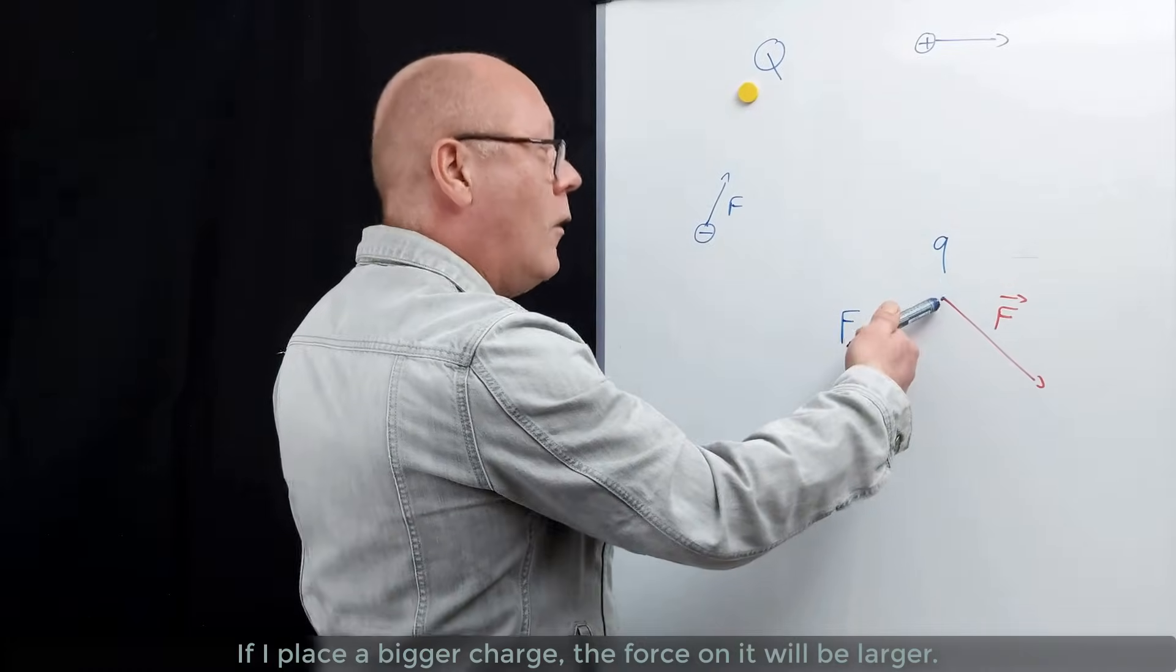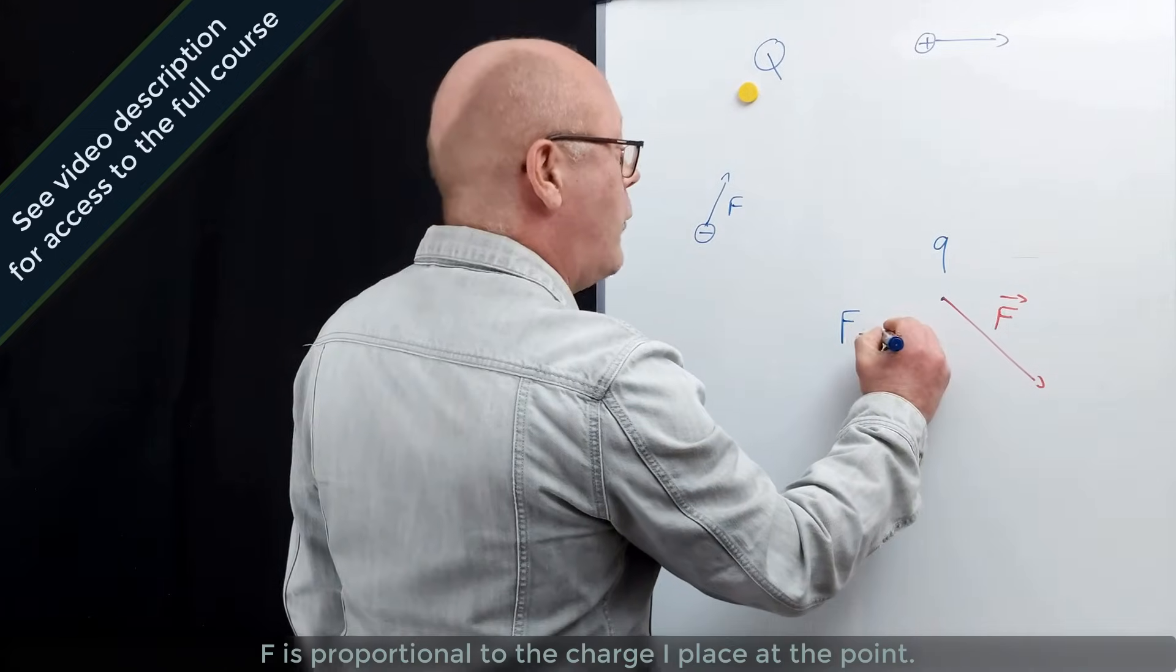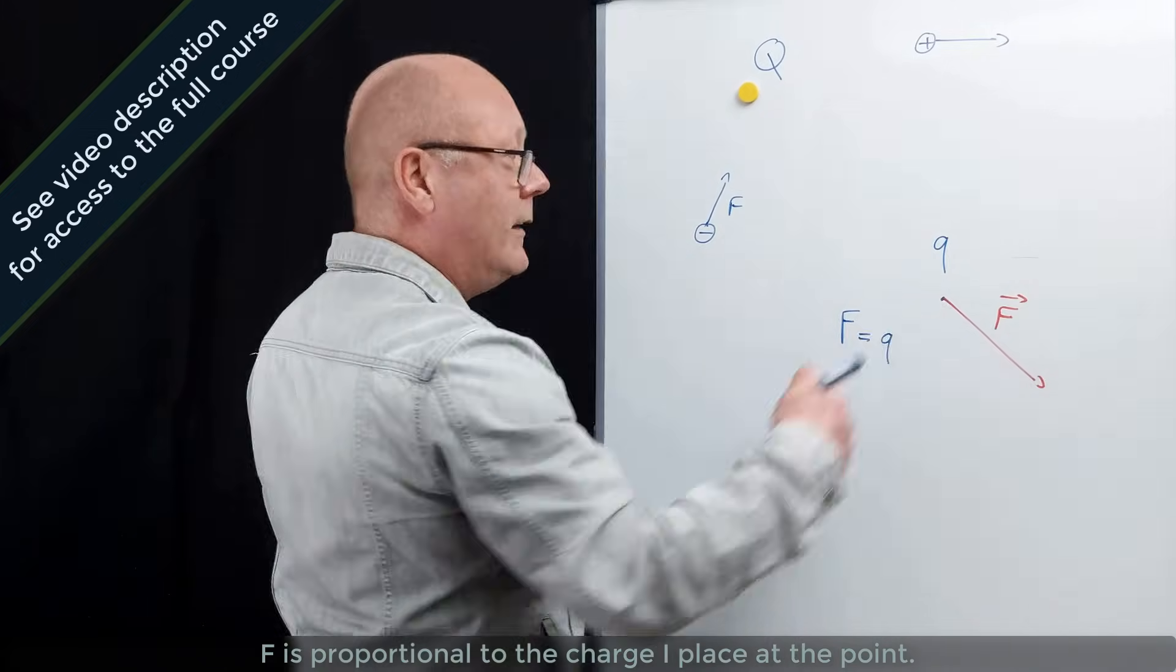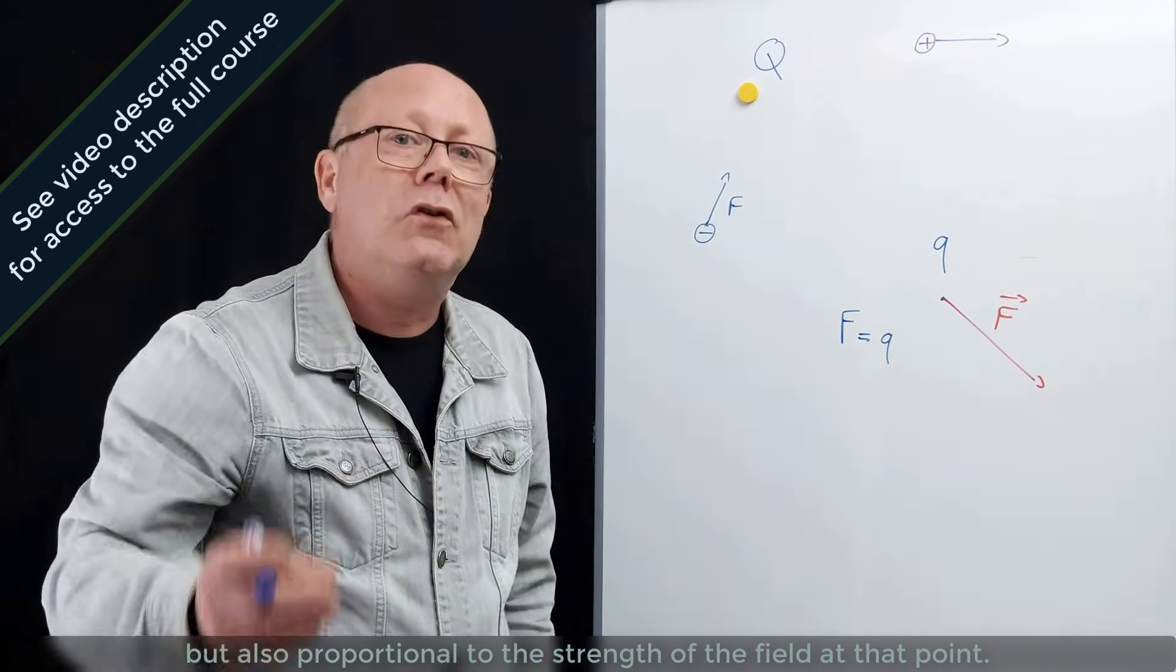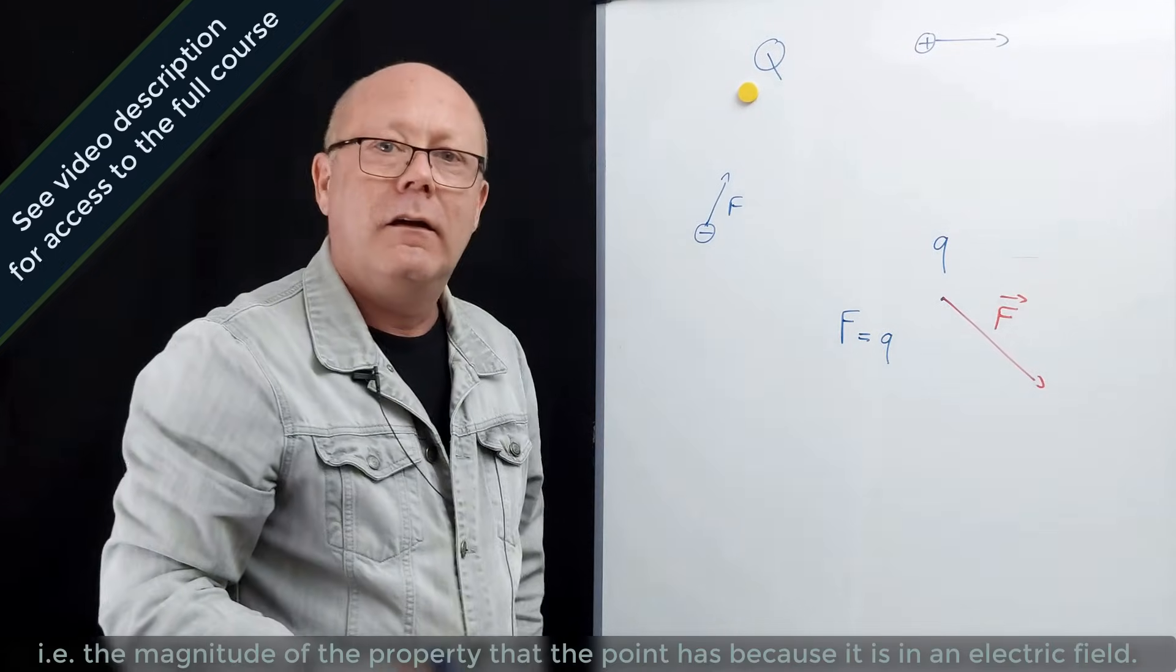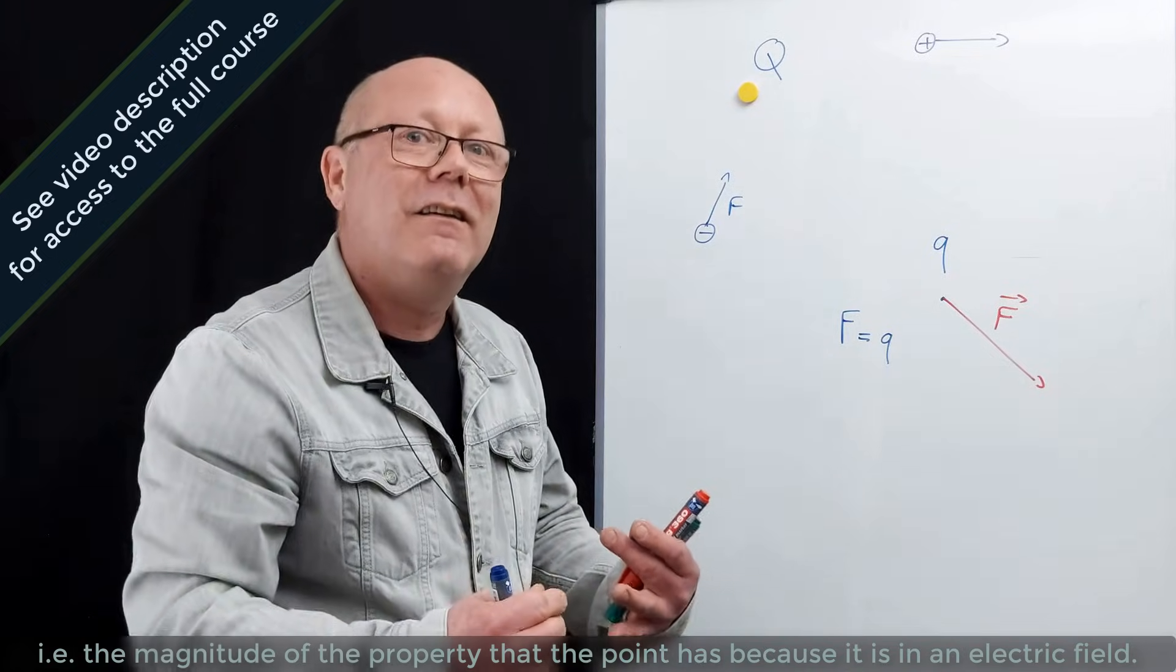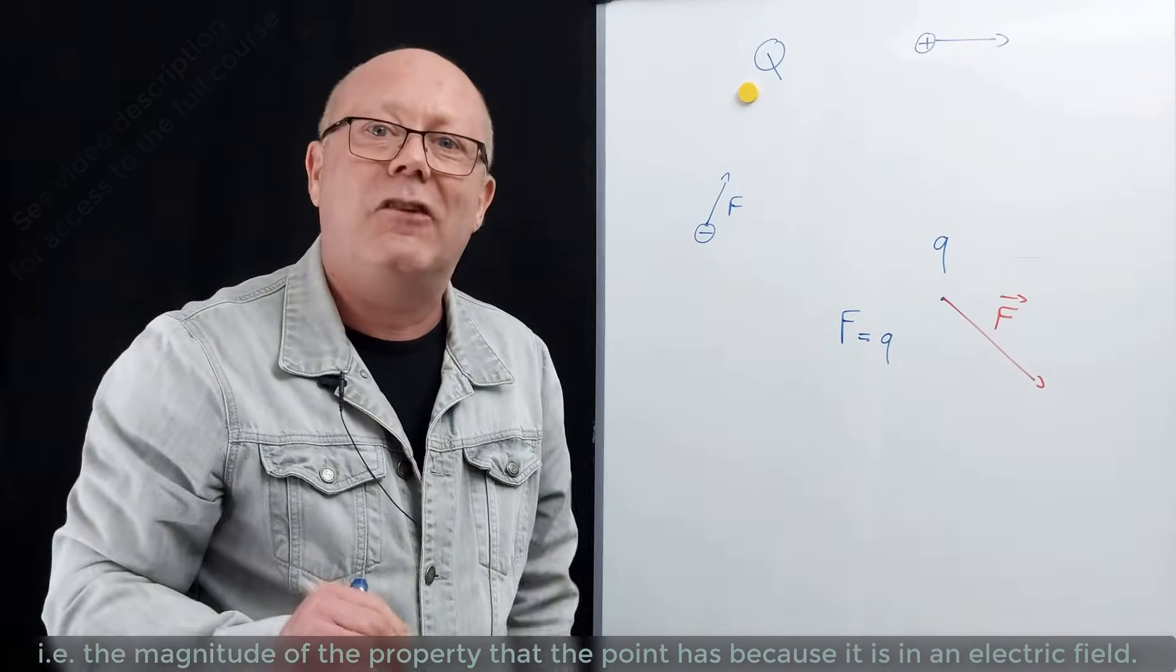If I place a big charge, well, the force on it will be bigger. The repulsion from Q will be bigger. So F is proportional to the charge I placed at the point, but also proportional to the strength of the field at that point, i.e. the magnitude of the property that the point has because it is in an electric field.